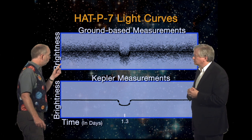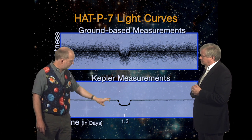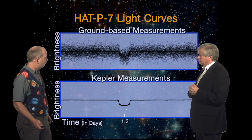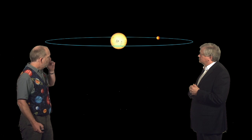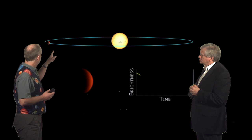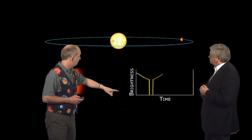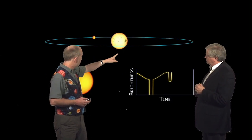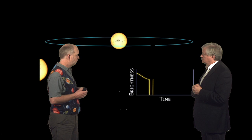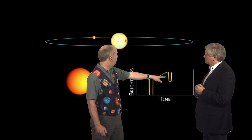Here's a plot we've seen before. This is showing the brightness versus time for ground-based data versus time with the Kepler data. Now let's zoom in just at the top bit here. If we imagine a transiting planet and look at brightness versus time, you get the big dip when it goes in front. But it's also going to be a little dip when it goes behind, because you'll still see the star but you'll lose the light from the planet. And because the planet is much smaller than the star, it's going to be a much smaller dip.